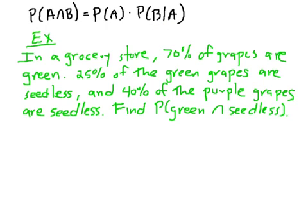Here's the general multiplication rule written at the top. The example: in a grocery store, 70% of the grapes are green and 30% are purple. 25% of the green grapes are seedless, and 40% of the purple grapes are seedless. We're going to find the probability of green and seedless. The easiest way to think about this is with a tree diagram. Here are all our grapes — we branch into green and not green (purple).